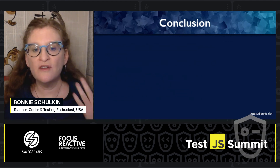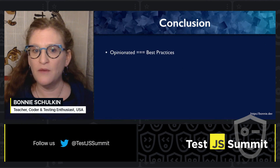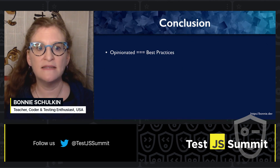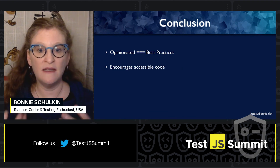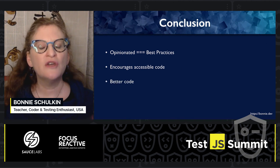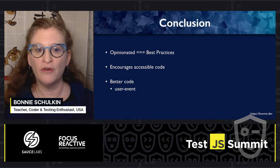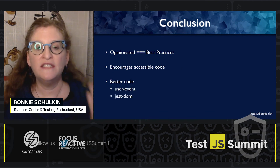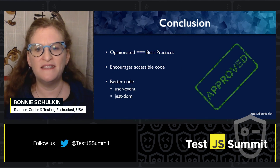In conclusion, these are the reasons I have come to prefer Testing Library. It is opinionated, which makes it easy to follow best practices. It encourages accessible code to make sure your tests can find elements the same way assistive technologies can. The code is just better — it's more readable and simulates more how users actually interact. User-event is very helpful for interactions, and Just DOM is helpful for assertions. All in all, it gets my stamp of approval.